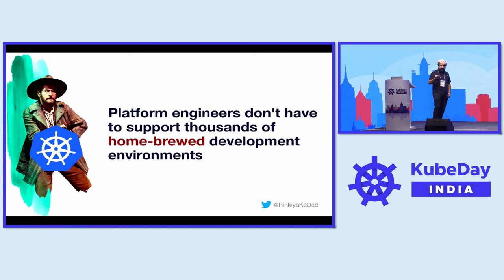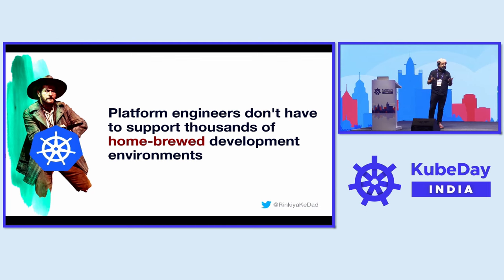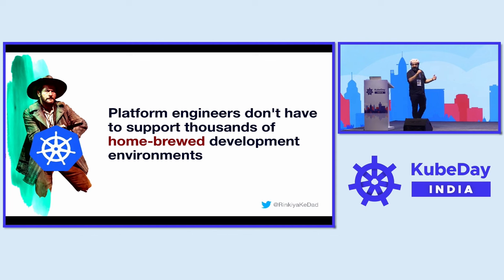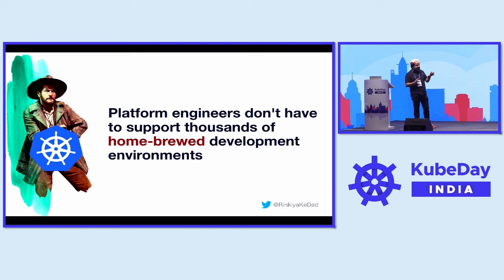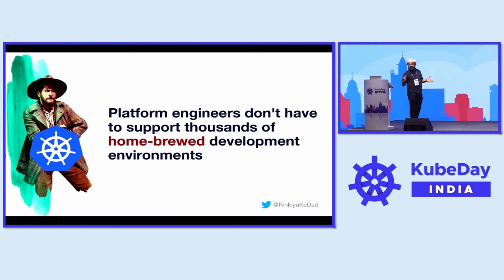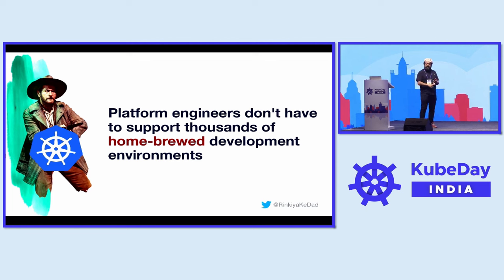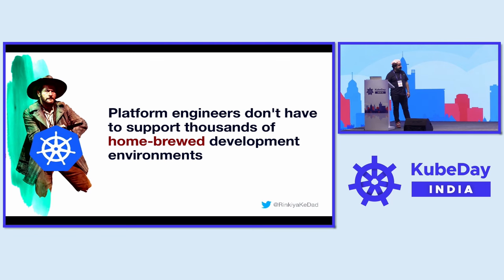By moving all dev environments to Kubernetes and Crossplane, we don't have to support thousands of homebrew development environments. A friend used to work at a company where someone wrote a 10,000-line bash file that developers used to build containers and pretend their laptops were Kubernetes — a mix of kind, Docker Compose, and who knows what. It worked most of the time, but then she left. Now there's this homebrew system that no one knows how it works, no support, no community behind it. Easy to build, hard to maintain.